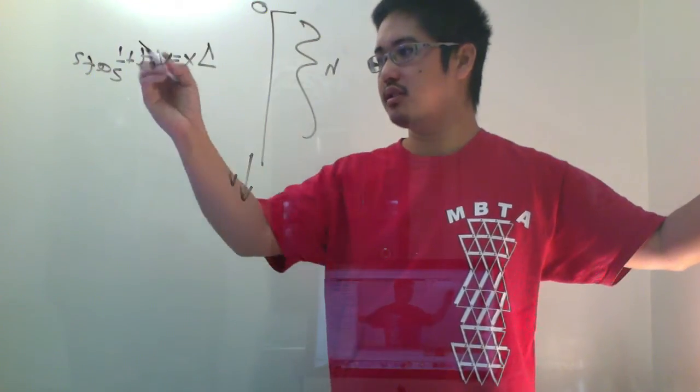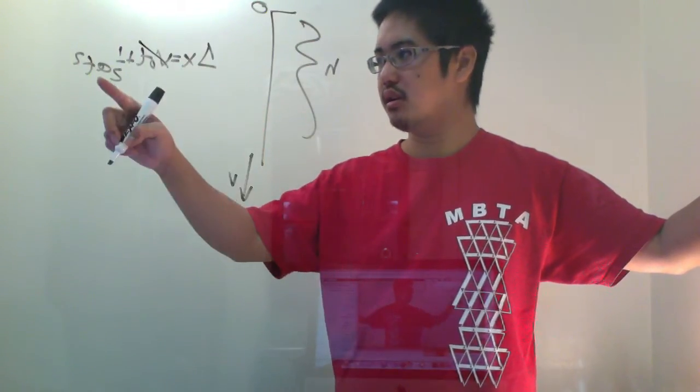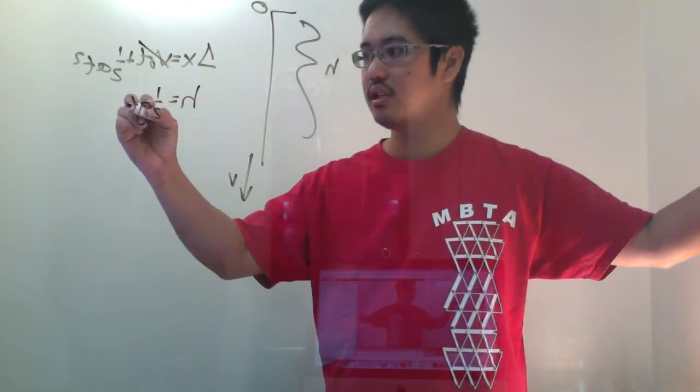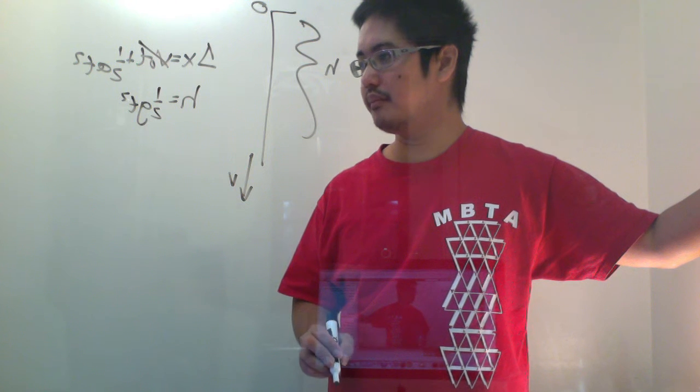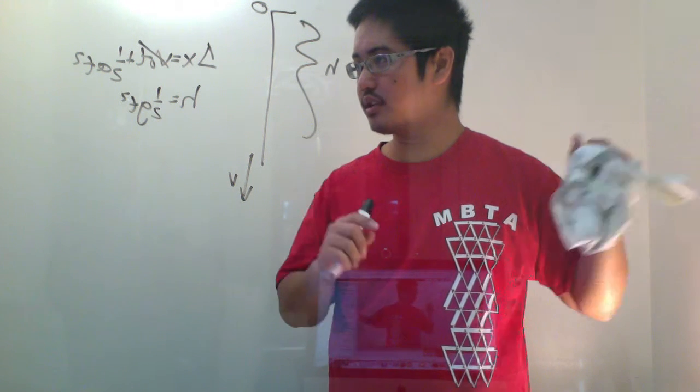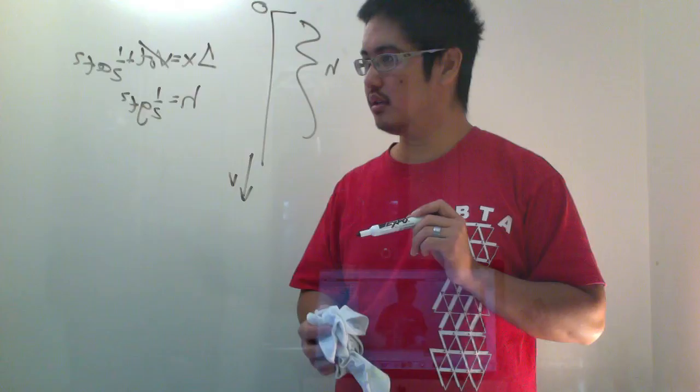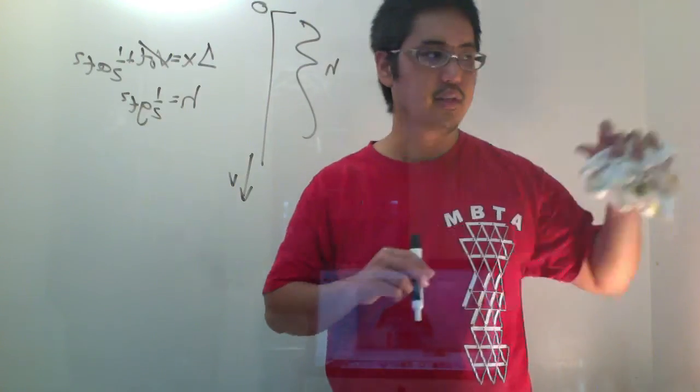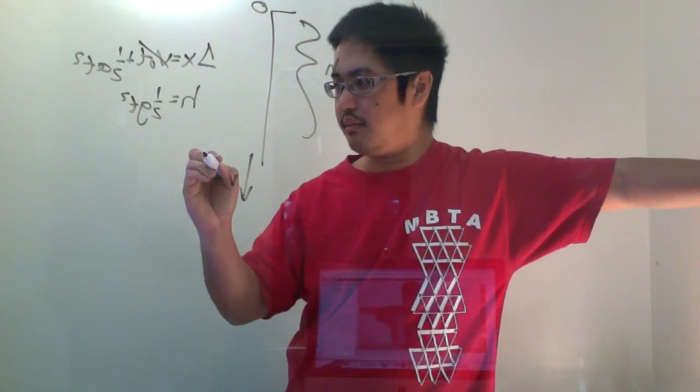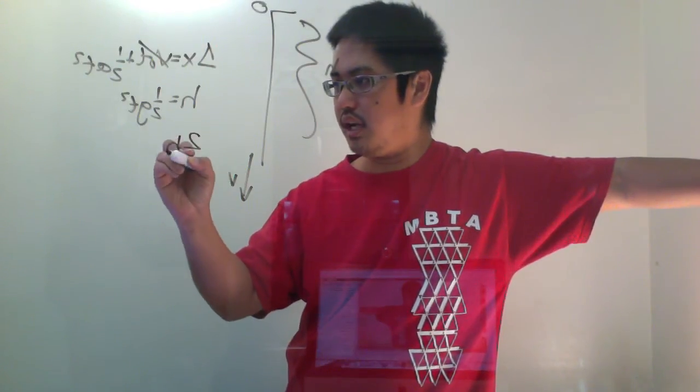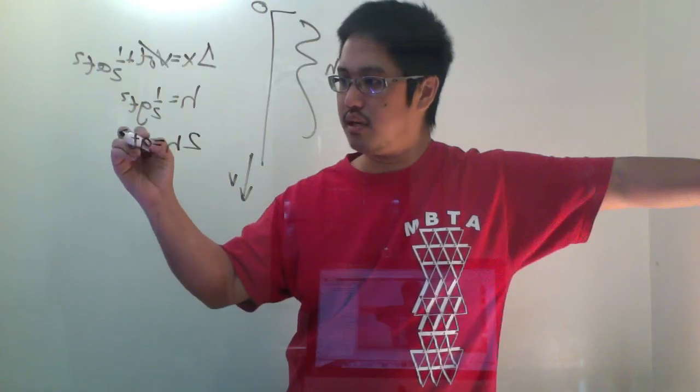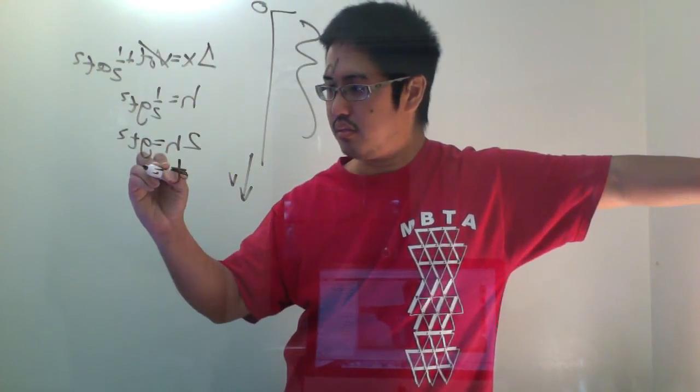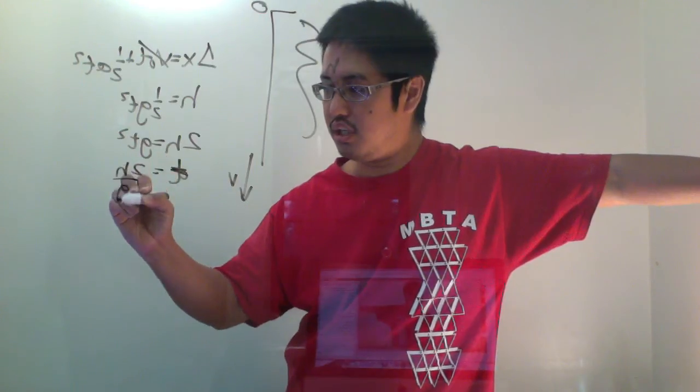My velocity initial is zero, my acceleration is g and my delta x is h so h is equal to one half g t squared. Actually, I'm sorry, that's not the equation I want to use. My time that it takes is 2h equals g t squared. So t is equal to the square root of 2h over g.